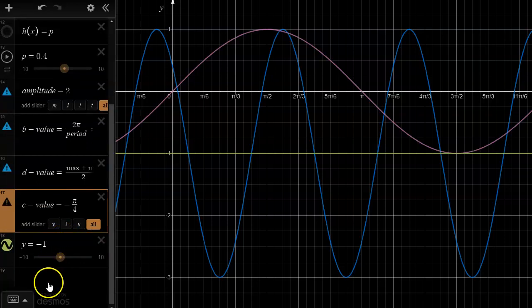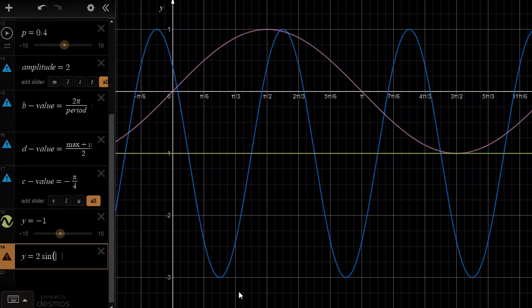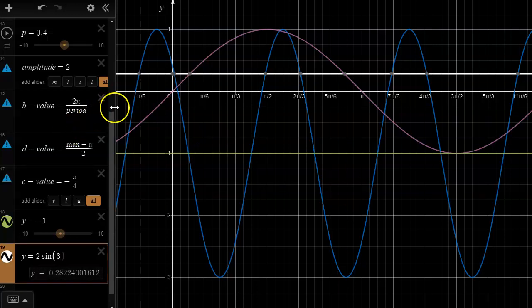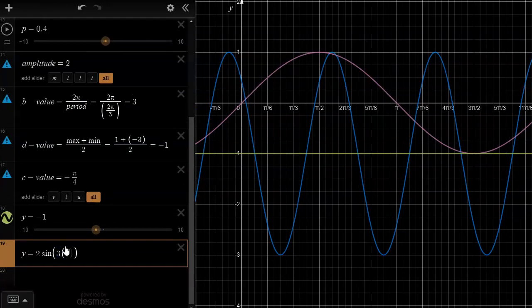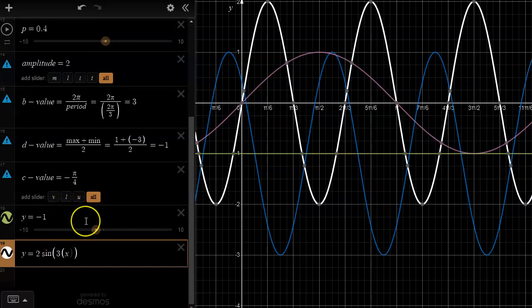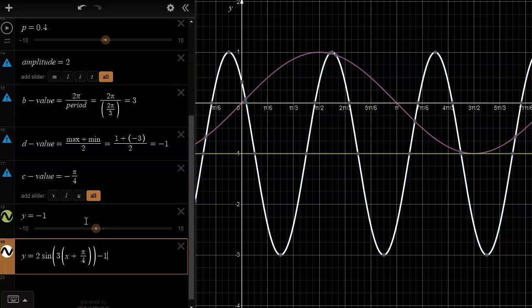Now that I've got all of that, I can write down the equation of the sine function which is y equals amplitude 2, sine of b value which is 3, times x minus the c value which is negative pi over 4, so that would be plus pi over 4, and then we add the d value which is negative 1. You'll notice that by putting the negative 1 there I've got the correct equation because it graphs right on top of the blue one.